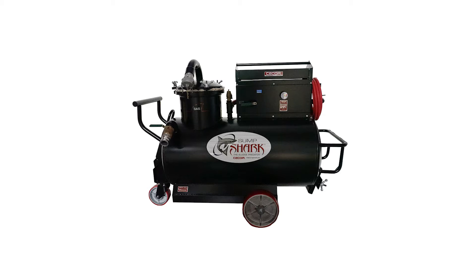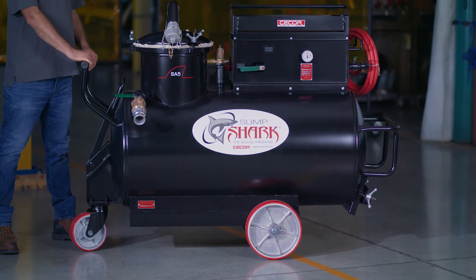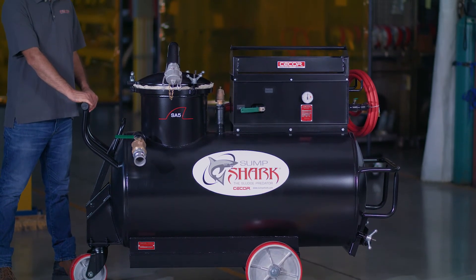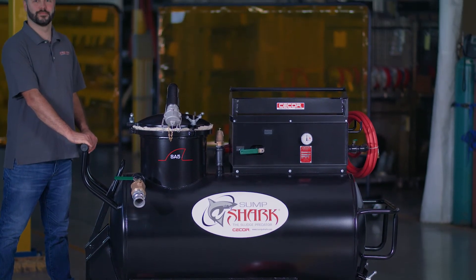The gallon capacity options of the SA5 PTL-H Tank Series are 90 gallons, 140 gallons, and 200 gallons. In this video, we are showing the 90-gallon Sump Shark model number SA590PTL-H.